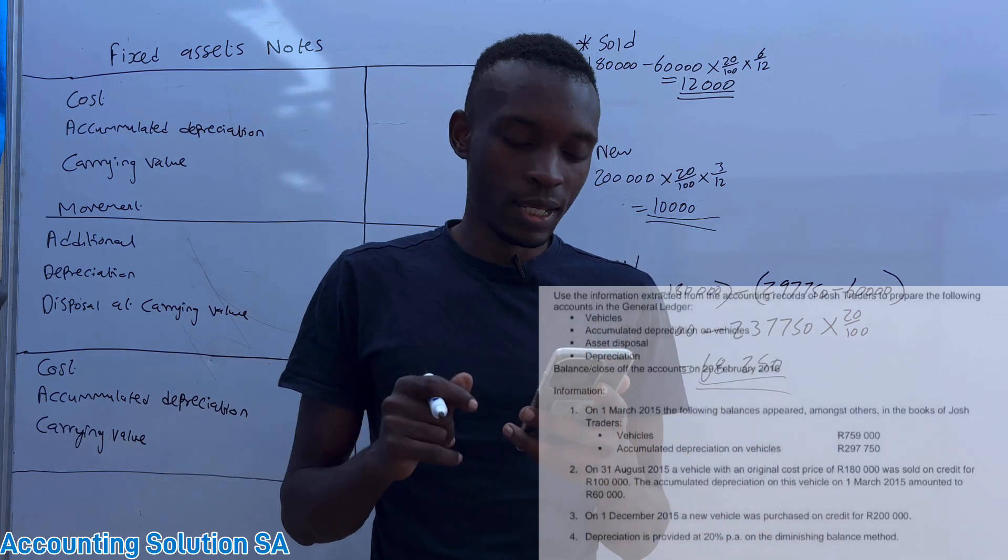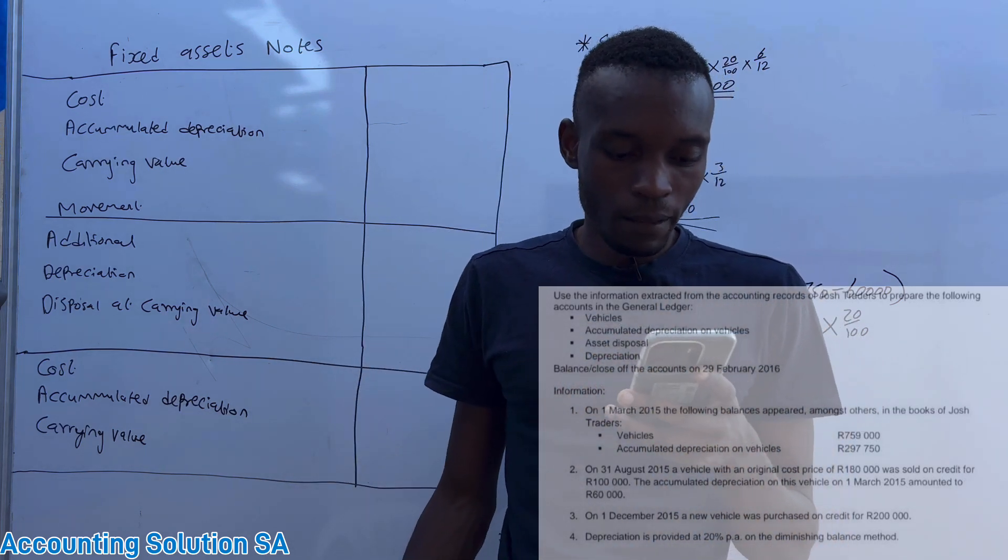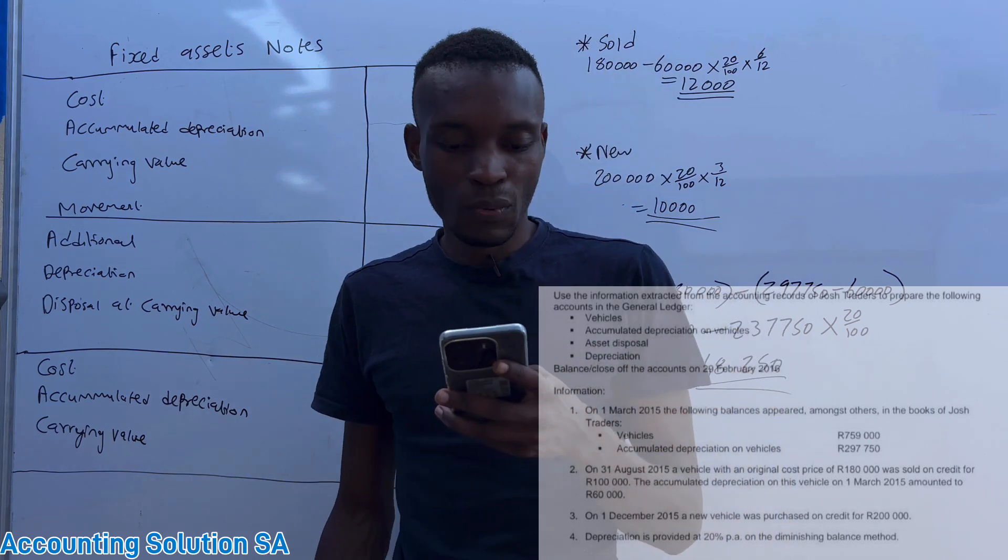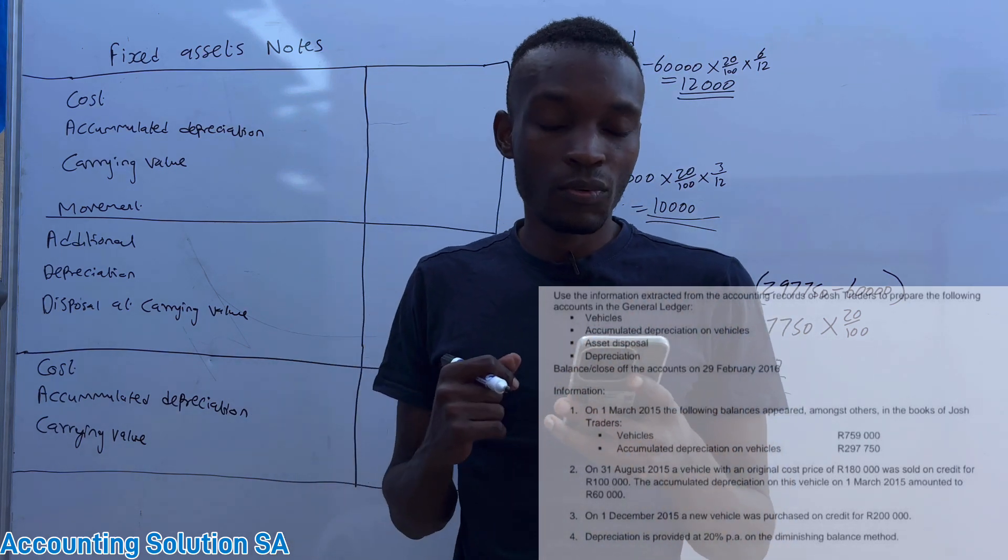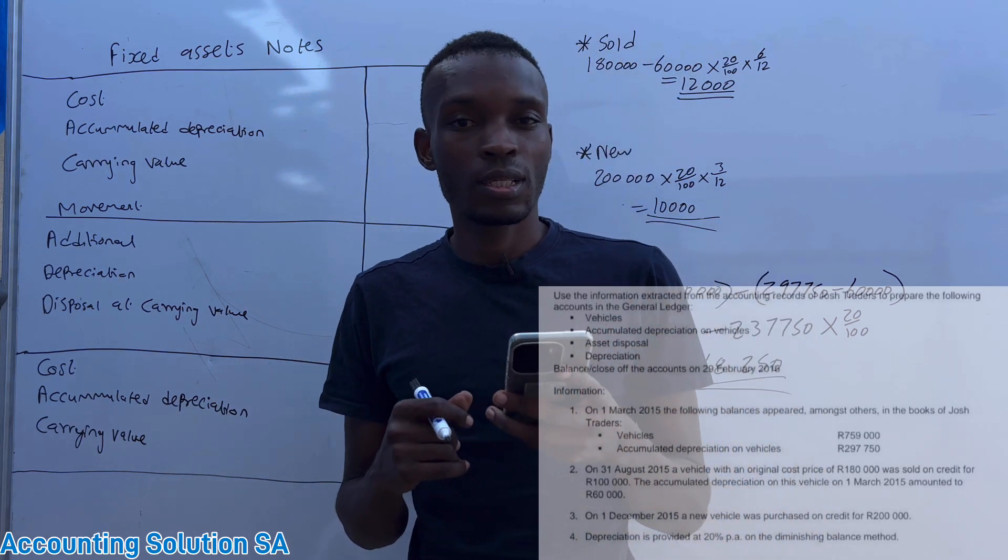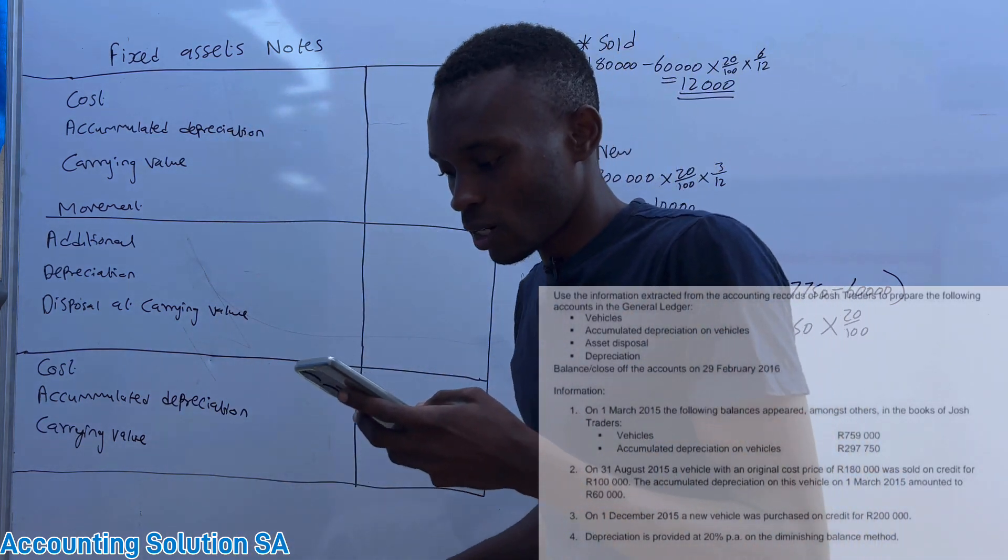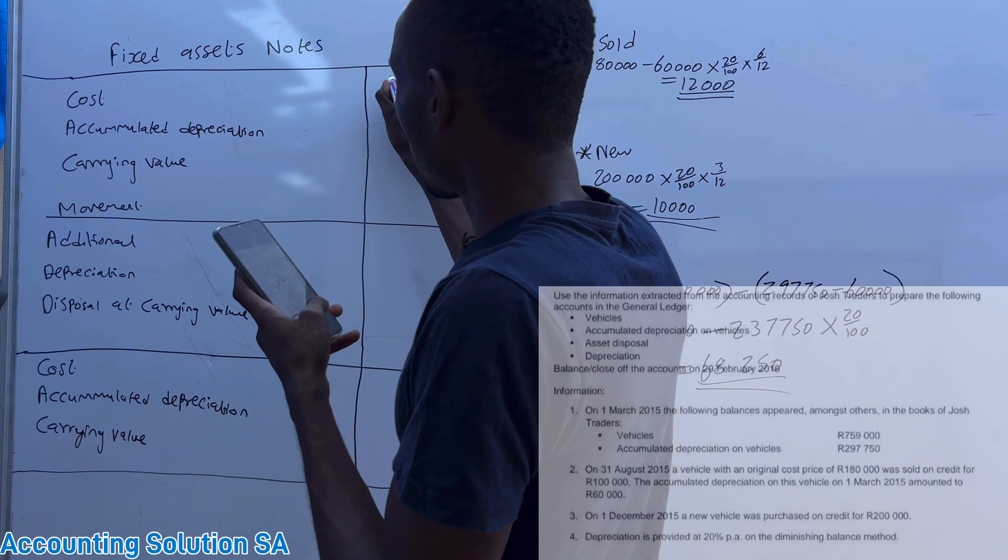They give us a vehicle amount and accumulated depreciation as well. So our year is ending 29 February 2016, which means that our opening balance we are going to start with it.